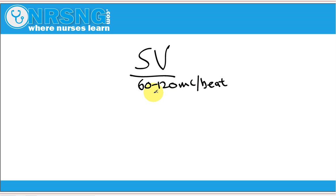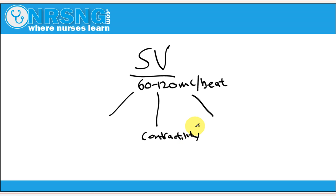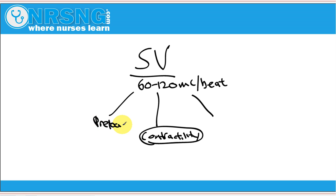There are three things that make up stroke volume. The first is contractility — basically the force with which the heart is beating. The other two things that make up stroke volume are preload and afterload. Those three things determine how much blood is being ejected from the heart with each beat.